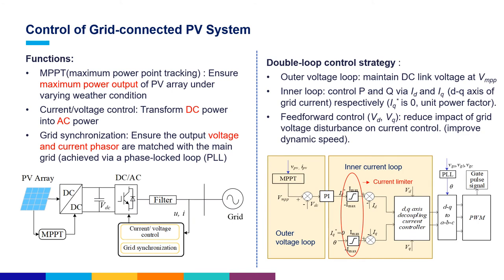The protection issue caused by PV generation mostly relies on its control system. As can be seen from the diagram, the PV system is mainly composed of a PV array, a DC-DC boost converter, a large DC link, an AC inverter, and a filter. The control system has three main functions: first, the MPPT, realized by the maximum power point tracking algorithm, which ensures maximum power output under varying weather conditions; second, the current/voltage control, which controls the inverter to transform DC into AC power; and third, grid synchronization, which ensures the output voltage and current phasors are matched with the main grid using a phase-locked loop control.